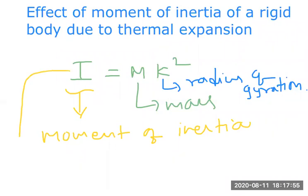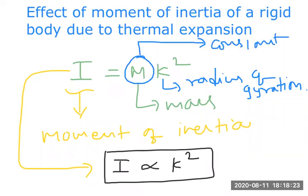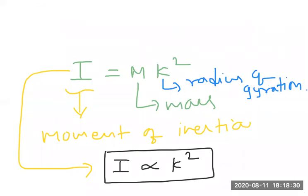Now, what is the relation between moment of inertia and radius of gyration? I is proportional to k². What happened to mass? The mass will not change when temperature changes. Whenever a rigid body is heated or cooled, mass is not affected — mass will remain constant. So from that, I can write I is proportional to k².